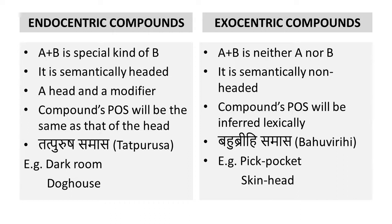In endocentric compounds, the part of speech of the whole compound is determined by that of the head. For example, 'darkroom' is an endocentric compound because it denotes a special kind of room which is dark. Since the part of speech of 'room' is noun, the part of speech of the whole compound 'darkroom' is also noun. The Sanskrit name for endocentric compounds, important for the NET exam, is tatpurusha samas.